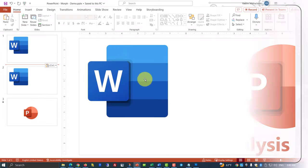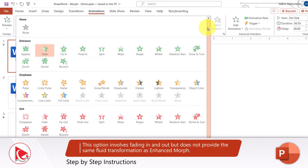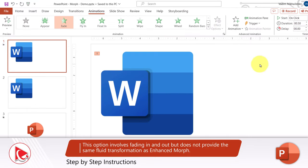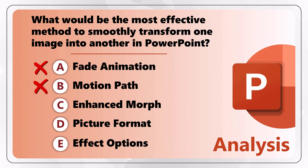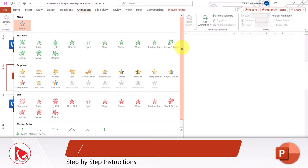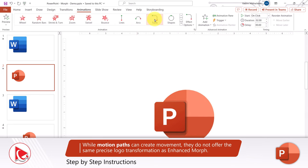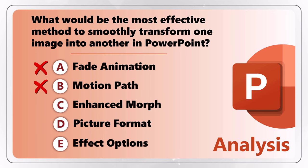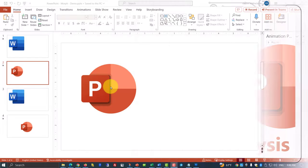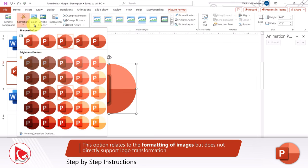This option involves fading in and out, but it does not provide the same fluid transformation we're looking for. Choice B, motion path, is also incorrect. While motion path can create movement, it does not offer the same precise logo transformation we're looking for. Choice D, picture format, is also incorrect. This option relates to formatting of the images, but it does not directly support logo transformation.